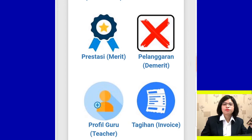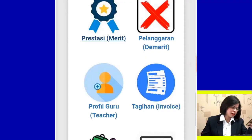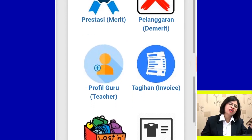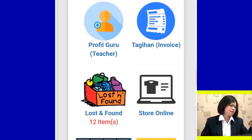Pelanggaran demerit records any offenses — the first, second, and third offense. We hope that section stays clear with no records. Profil Guru shows teachers' information including their picture, teaching background, educational background, and email.